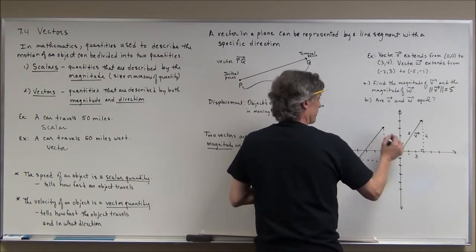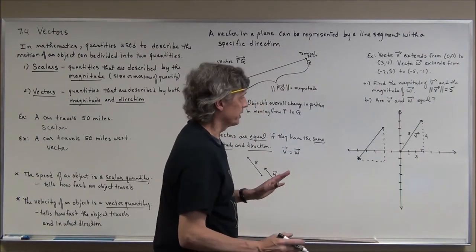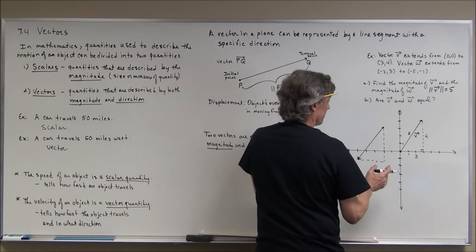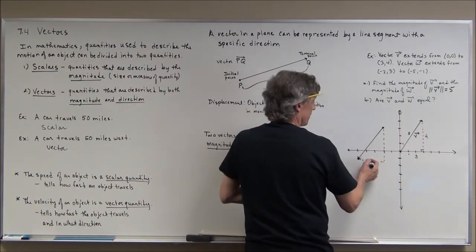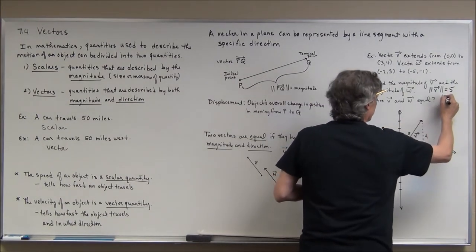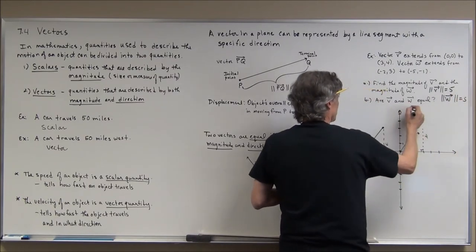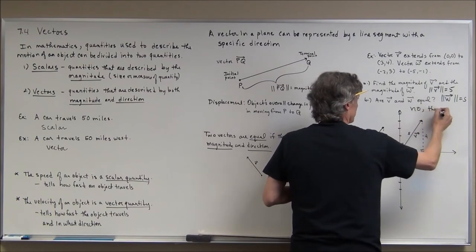Notice the slope would be up 4 over 3. Even though my drawing doesn't look right, they have the same slope so you would think they have the same direction, but you can see they're not - they're actually in opposite directions. But the magnitude is also 5, so the magnitude of w is 5. The answer is no, they are in opposite directions.